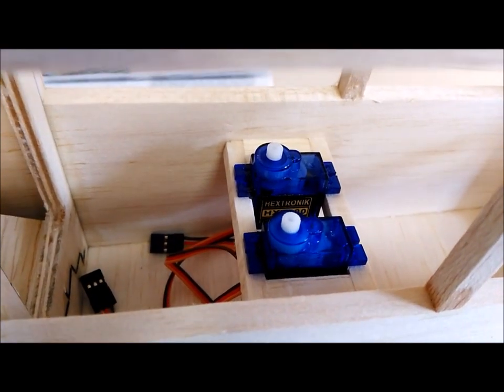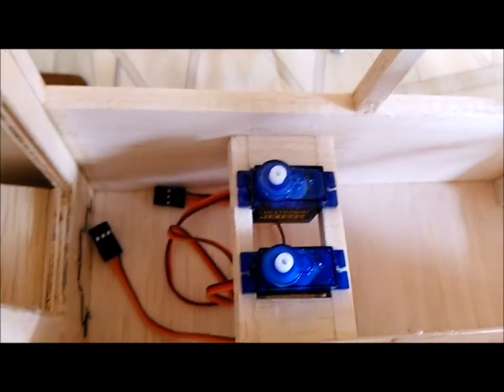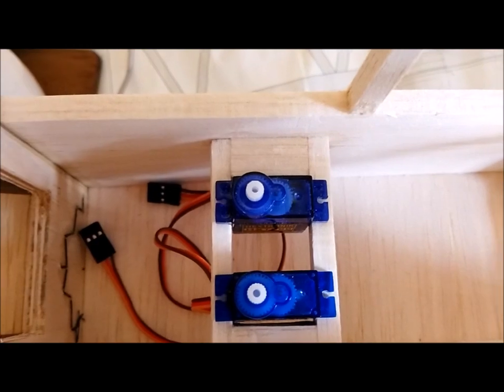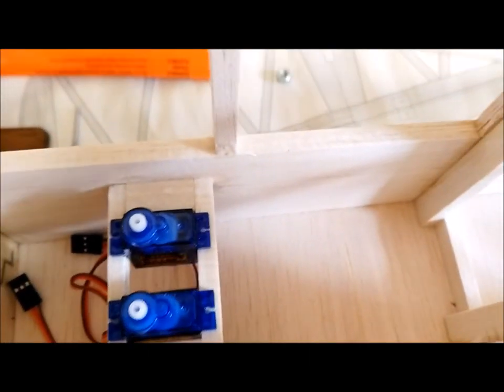So now I have the servo tray installed and I've just dry installed the two micro servos. My next job will be to screw them down into position and then I need to start making the push rods which connect the servos to the control surfaces right at the tail end of the plane.